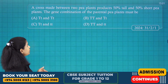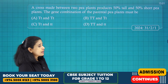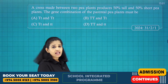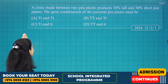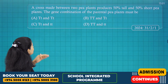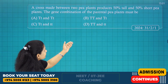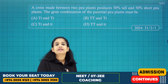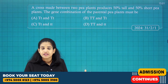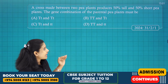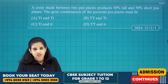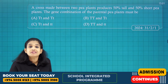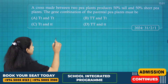Next question: A cross made between two pea plants produces 50% tall and another 50% short plants. The gene combination of the parental pea plants must be — you have to find the parental combination from the given options.